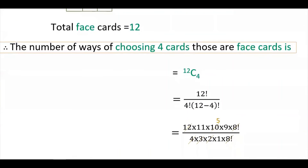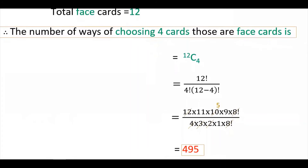12C4 equals 12 factorial divided by 4 factorial into (12 minus 4) factorial, which is 12 factorial divided by 4 factorial into 8 factorial. Calculating this gives 495.